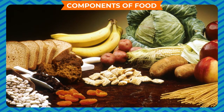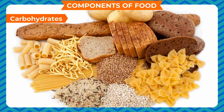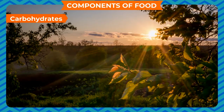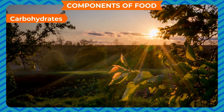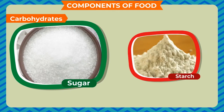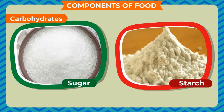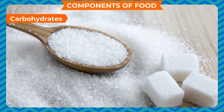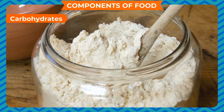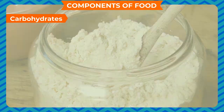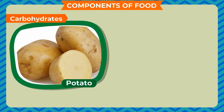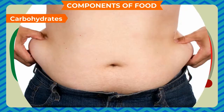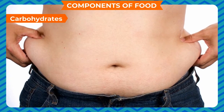The major components of our food are carbohydrates. Carbohydrates are the main energy-giving foods. They are produced in green plants through the process of photosynthesis. Sugar and starch are the main forms of carbohydrates. Sugars are used to provide instant energy while starch releases energy more slowly than sugars. Rice, wheat, potato, banana, bread, and sugar are the main sources of carbohydrates. Excessive carbohydrates get stored in our body as fat.